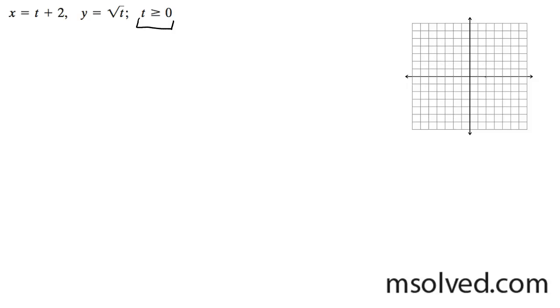So starting off for x, we put in 0, we get 2, and then square root of 0 is 0. We put in 2, we get 4 for x, and we get square root of 2 for y.